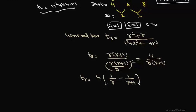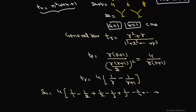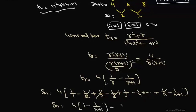For the sum of n terms, Sn = 4 × [(1/1 − 1/2) + (1/2 − 1/3) + (1/3 − 1/4) + ... + (1/n − 1/(n+1))]. The intermediate terms cancel (telescoping), giving Sn = 4 × (1 − 1/(n+1)) = 4n/(n+1). For the sum to infinity, S∞ = limit as n→∞ of 4n/(n+1) = 4, which is the answer.